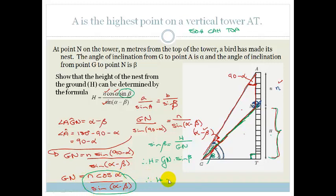Therefore, H is equal to N cos alpha sine beta all over sine of alpha minus beta. And there you go.